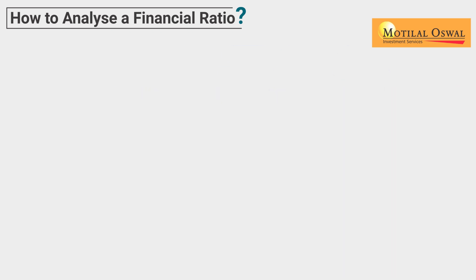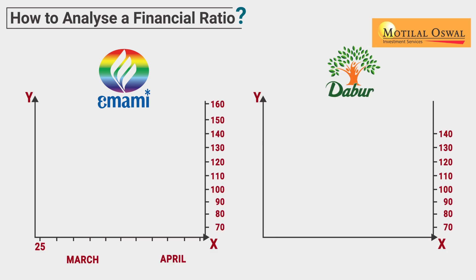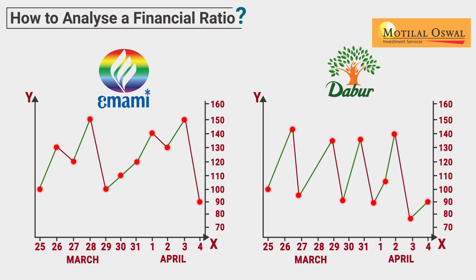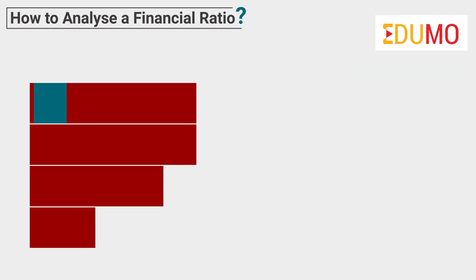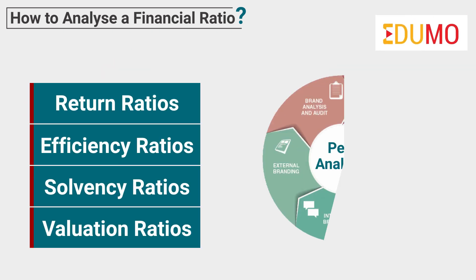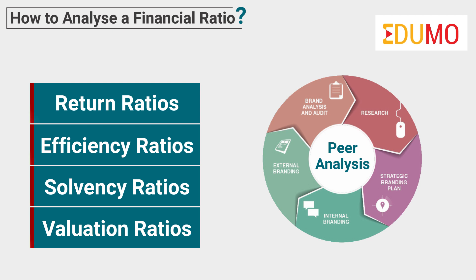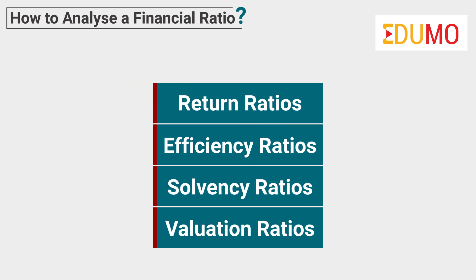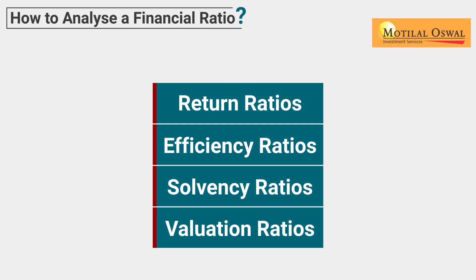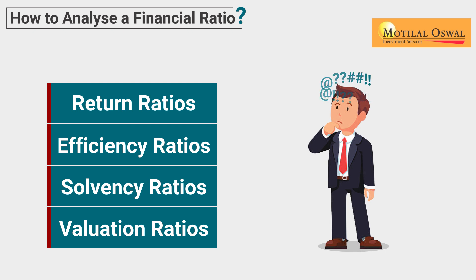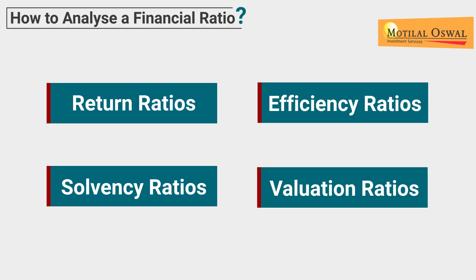Likewise, we have to look at all the other ratios to get a clear picture of how a company operates compared to its peers. Financial ratios are used in peer analysis to find out which company has a better ratio in a particular industry. There are many more ratios out there, but accessing all of them would be a hectic task. It is important to know which ratios are actually needed to analyze a specific sector.